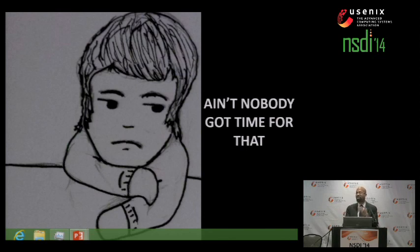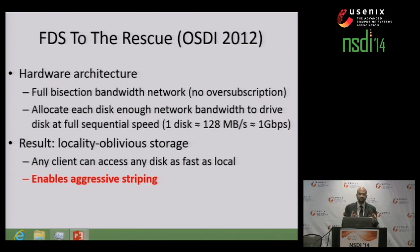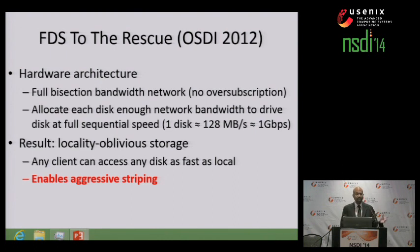The answer is that we're going to use FDS, or Flat Data Center Storage. FDS uses a network with full bisection bandwidth, meaning there's no oversubscription in the core. FDS also allocates each physical disk with enough network bandwidth for remote clients to access that disk at full sequential speeds. For example, if a single physical disk has roughly 128 megabytes per second of throughput — roughly 1 gigabit per second — and a storage server has 10 disks, FDS is going to allocate that server at least a 10-gig NIC. The result is a locality-oblivious storage substrate where clients can access any disk, regardless of service location, as fast as if it were a local disk.